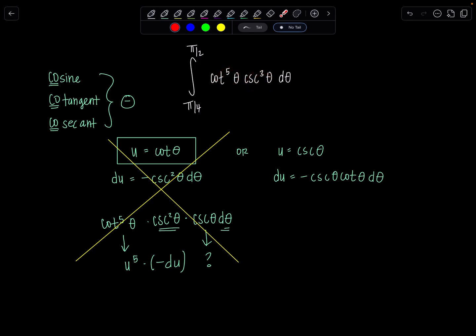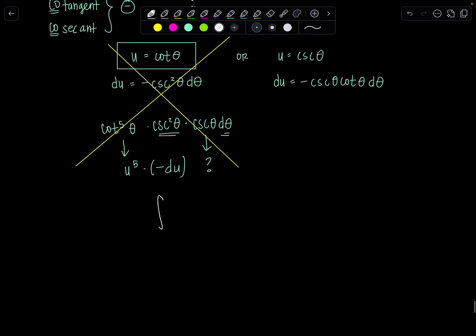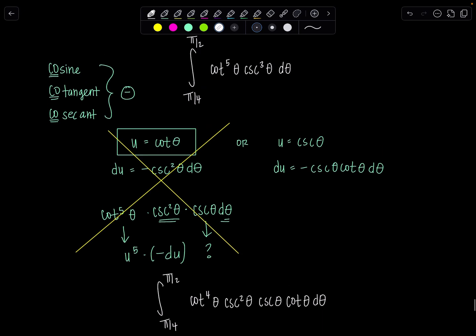So remember we had integral π/4 to π/2. I'm gonna pluck off a cosecant and a cotangent, so now I have cotangent to the fourth theta, then cosecant squared theta, and then that cosecant theta cotangent theta d theta is waiting for me. Perfect. If you want to just make it even easier, negative du is equal to all of this cosecant theta cotangent theta d theta.